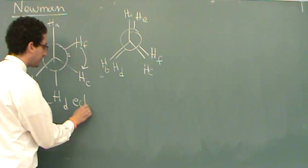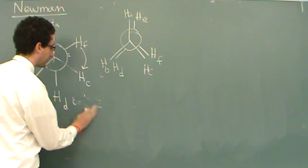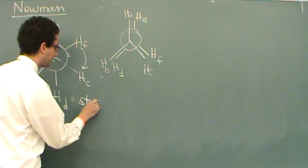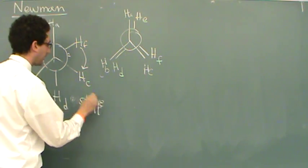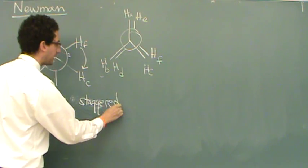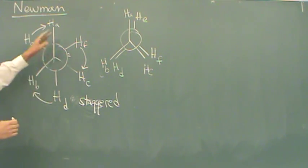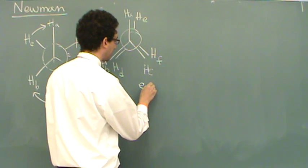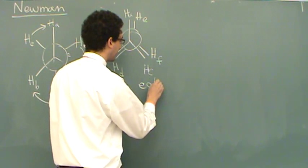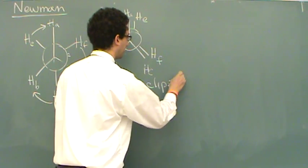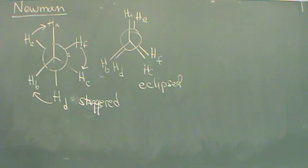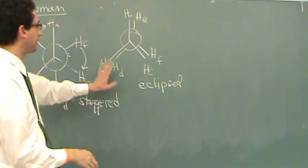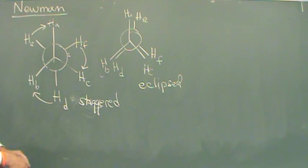This is called the staggered. The one on the left is called the staggered because the hydrogens are staggered. And as I kind of alluded to just a second ago, this is called the eclipsed. That is, one's right on top of each other, just like a solar eclipse or something. One hydrogen right on top of each other.